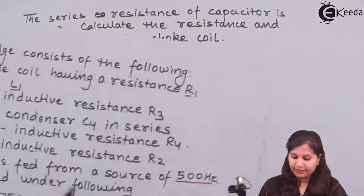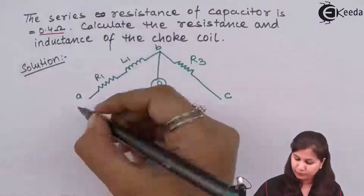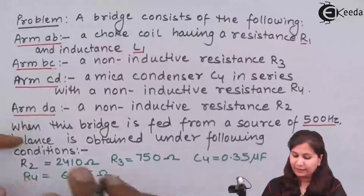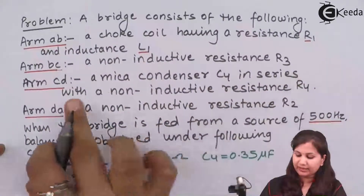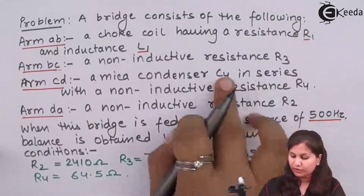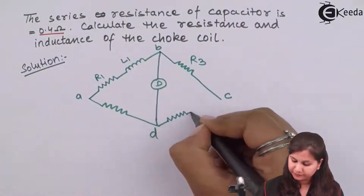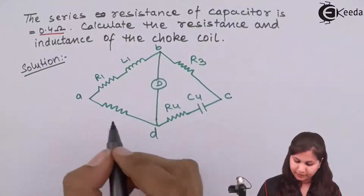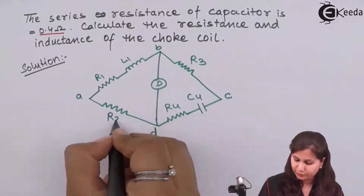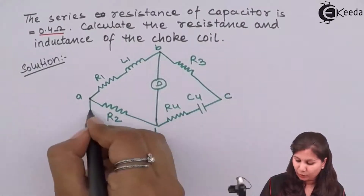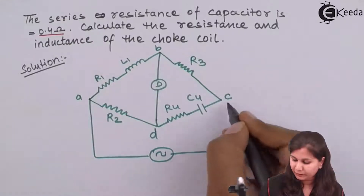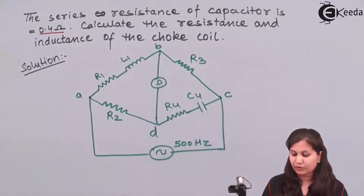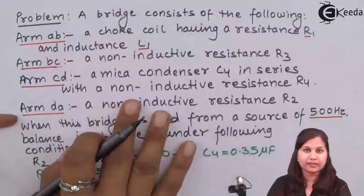Arm DA is a non-inductive resistance R2. Arm CD is a mica condenser C4 in series with a non-inductive resistance R4, so C4 and R4 are connected in series. Between A and C the voltage source is connected, giving us a frequency of 500 hertz. This is the circuit diagram for the bridge given in the question.